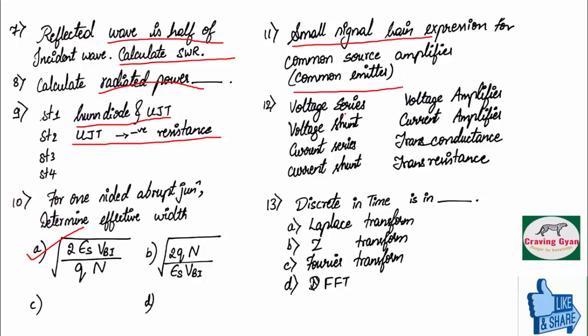Twelfth question. You have to match the following. Voltage series, voltage shunt, current series, current shunt. On the other side, they have given voltage amplifier, current amplifier, transconductance, transresistance.